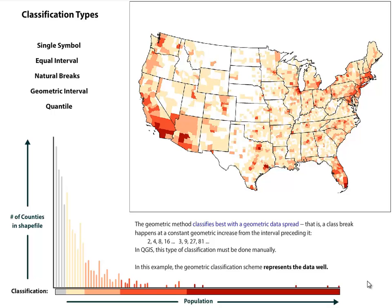Unlike the raster data model in which values are represented more or less raw within each pixel, the vector data model requires a reporting geography, in this case polygons, and these polygons represent counties, in order to symbolize any given set of attributes. These polygons or counties may have multiple attributes, but we can only symbolize one of them at a time. In QGIS, the default symbology is just a single symbol.